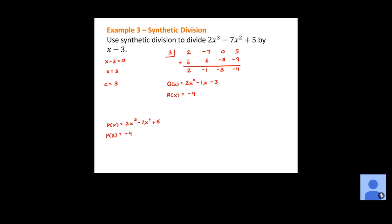We can test that by plugging in 3: 2 times 3 cubed minus 7 times 3 squared plus 5. That's 2 times 27 which is 54, minus 7 times 9 which is negative 63, plus 5. So 54 minus 63 is negative 9, plus 5 is negative 4. This checks out. Synthetic division is especially useful when you have large exponents or large values, keeping the numbers much smaller than direct substitution.